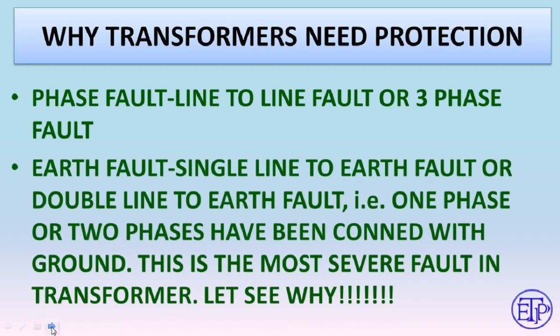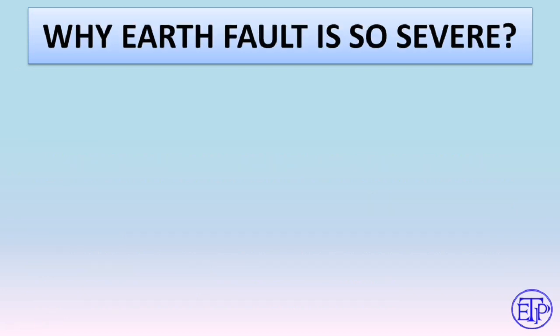Earth fault may be a single line-to-earth fault or double line-to-earth fault, meaning one or two phases have been connected with the ground. This is the most severe fault in a transformer.